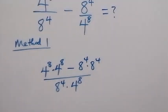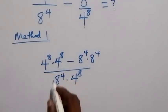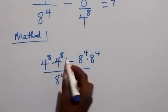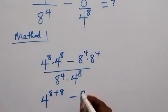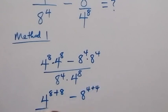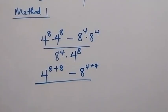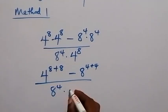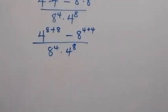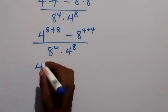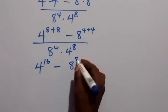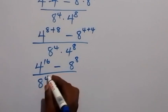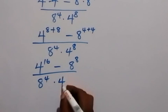In the next term, let's apply the law of indices. We have the same base multiplying, so we add the powers. This becomes 4 raised to power 8 plus 8, then minus 8 raised to power 4 plus 4, all divided by 8 raised to power 4 times 4 raised to power 8. This gives 4 raised to power 16 minus 8 raised to power 8, divided by 8 raised to power 4 times 4 raised to power 8.